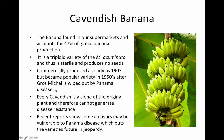The Cavendish banana. This is the banana found in our supermarkets, and it accounts for 47% of global banana production. It is a triploid variety of the Musa acuminata, and is thus sterile and produces no seeds. Because of this, every Cavendish is a clone of the original plant, and therefore cannot generate disease resistance.